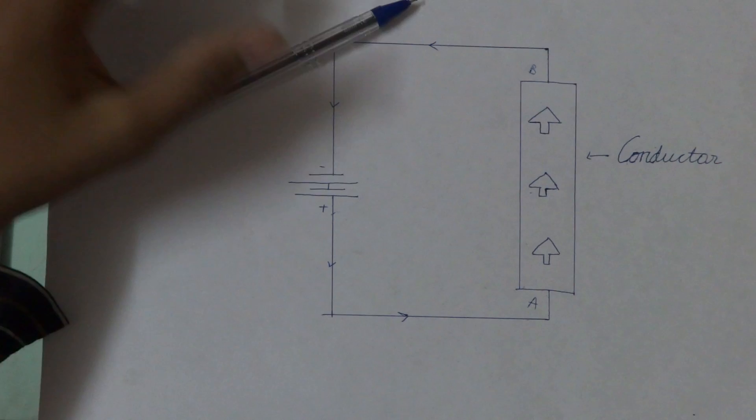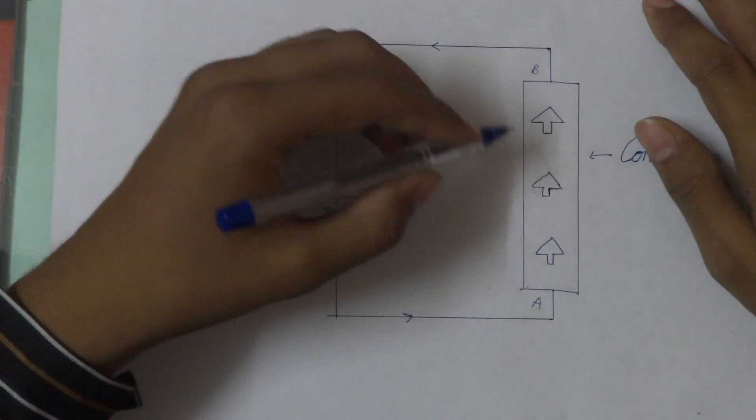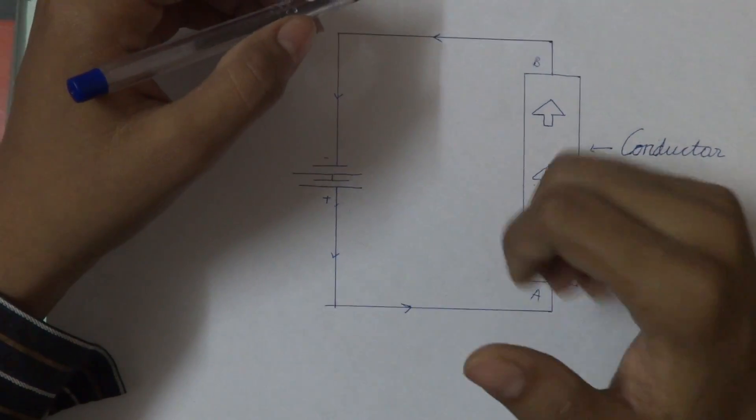If the outstretched thumb gives the direction of the motion of the current, then the curved fingers will give the direction of the magnetic field.